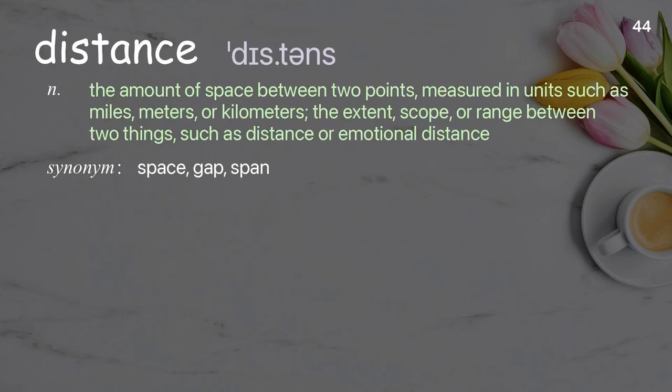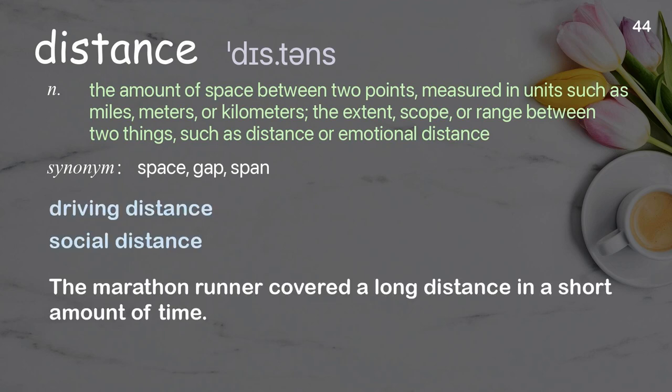Distance: the amount of space between two points, measured in units such as miles, meters, or kilometers; the extent, scope, or range between two things. Examples: driving distance, social distance. The marathon runner covered a long distance in a short amount of time.